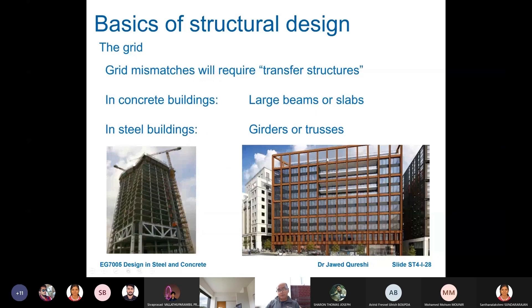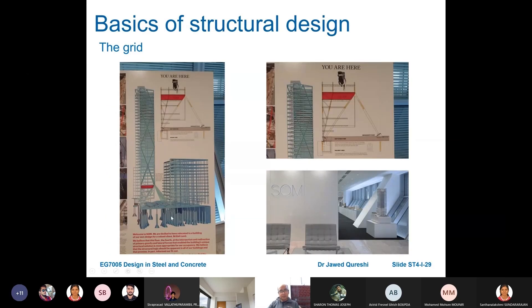Grid mismatches will require transfer structures. In concrete buildings we use large beams or slabs, and in steel buildings we use girders or trusses. On your right, you can see floors without beams across, which requires large beams above and below to carry the loading. On your left, you can see columns above a girder going all the way through 12 to 15 stories — to carry that column load we need this truss. If there is a mismatch of grid, it will always require some kind of transfer structure. You can see pile foundations and bracing with cables attached.